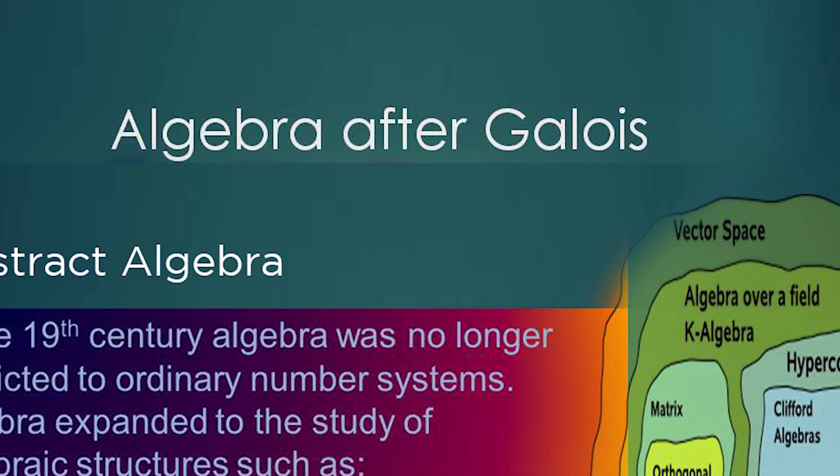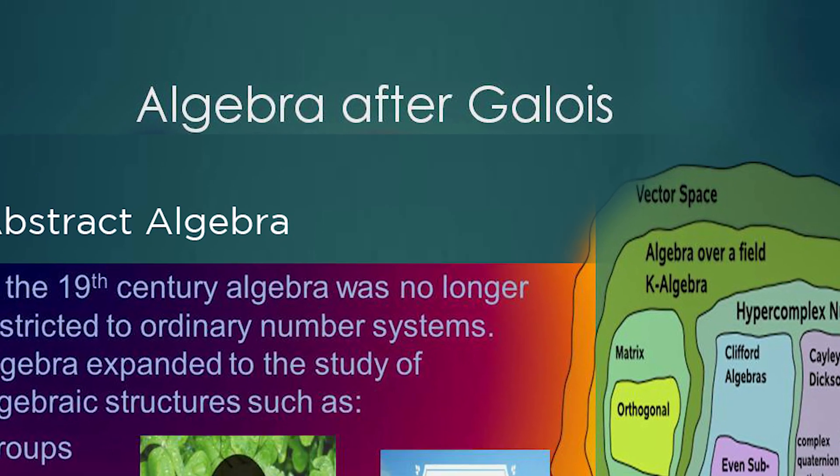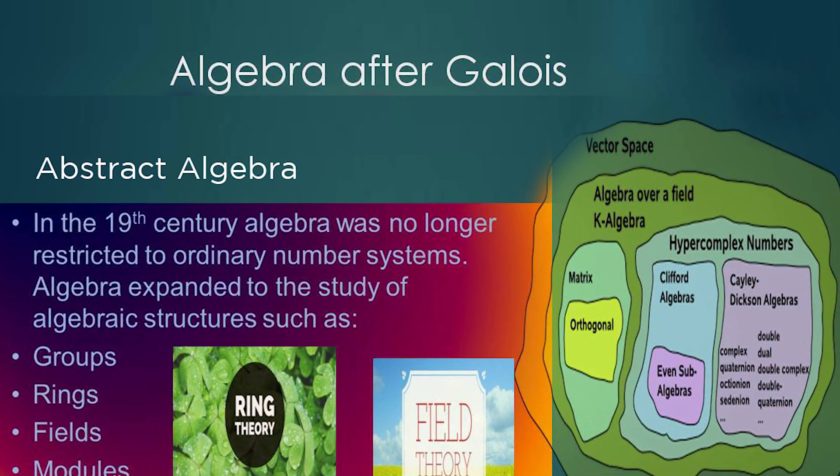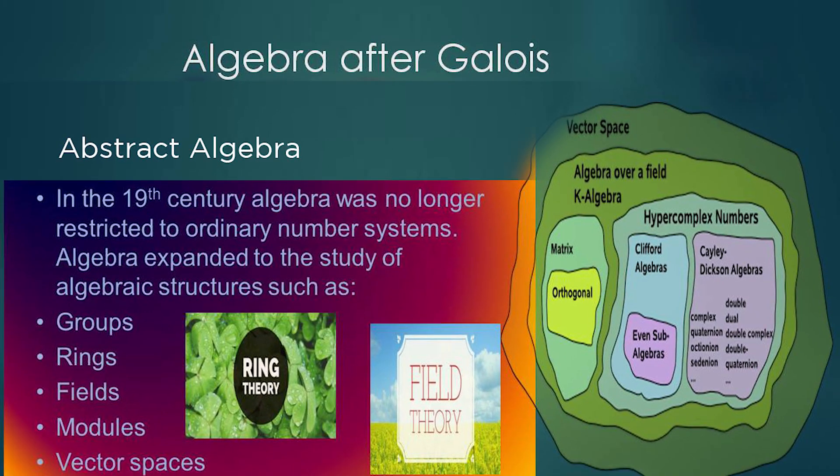By the end of 19th century, algebra is expanded to the study of abstract structures such as groups, rings, fields, modules, and vector spaces.